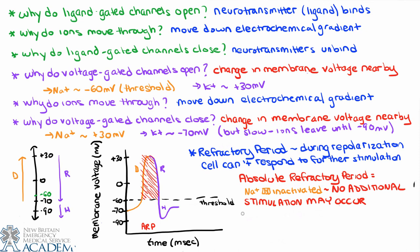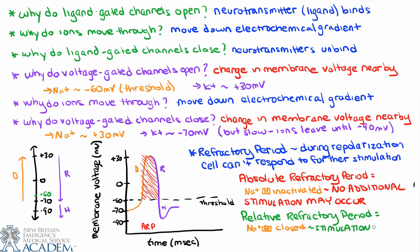From minus 60 millivolts, we transition into the relative refractory period. The sodium ion channels convert from being inactivated to being closed. Think of it like a door: if the door is closed and locked, we're in absolute refractory; if the door is just closed, we're in relative refractory. During the relative refractory period, some stimulation can occur, but it would have to overcome hyperpolarization. From minus 60 until we get back up to minus 70, we're in the relative refractory period — meaning we could try to generate another action potential, but it would be really tough for the cell to manage.